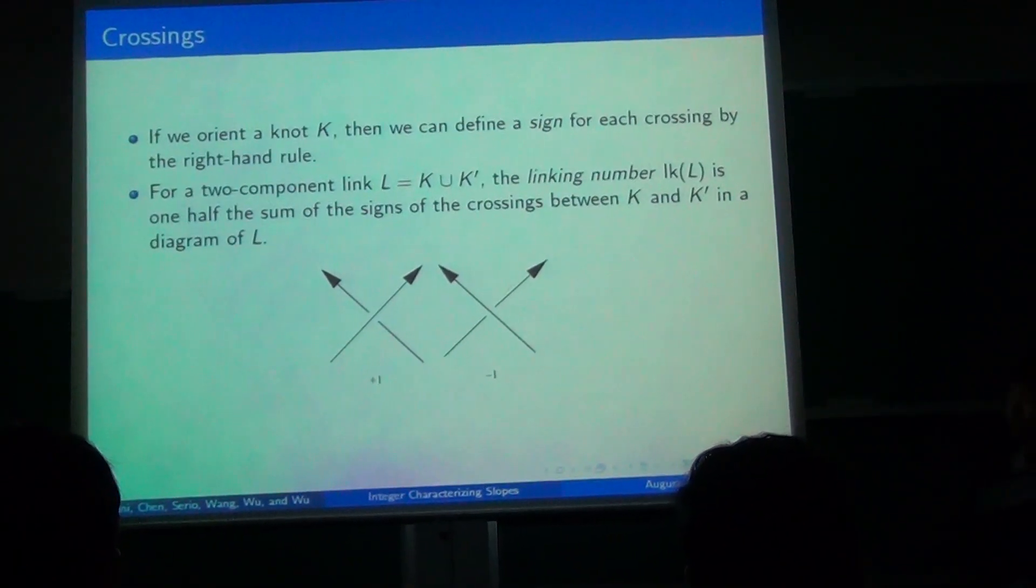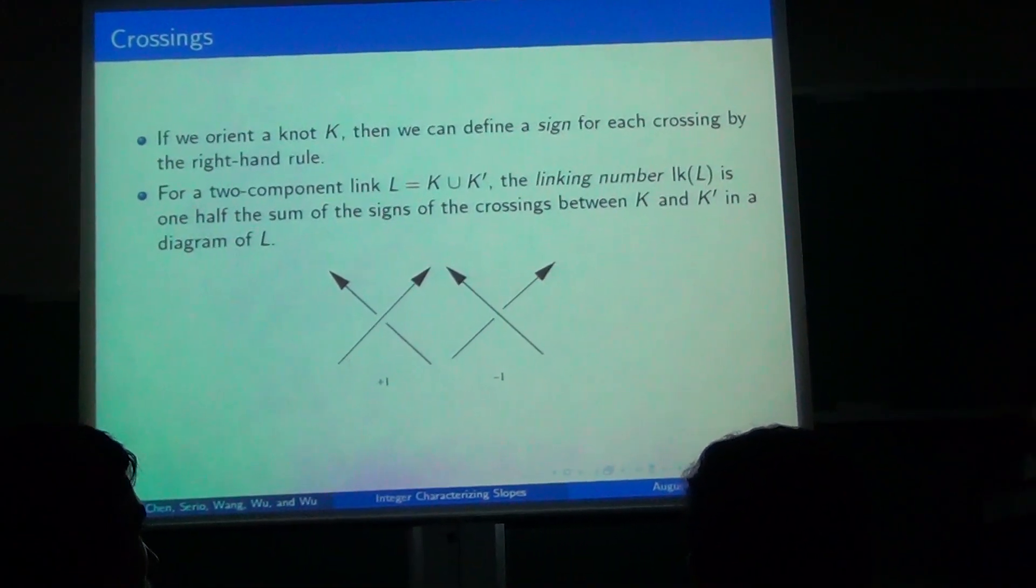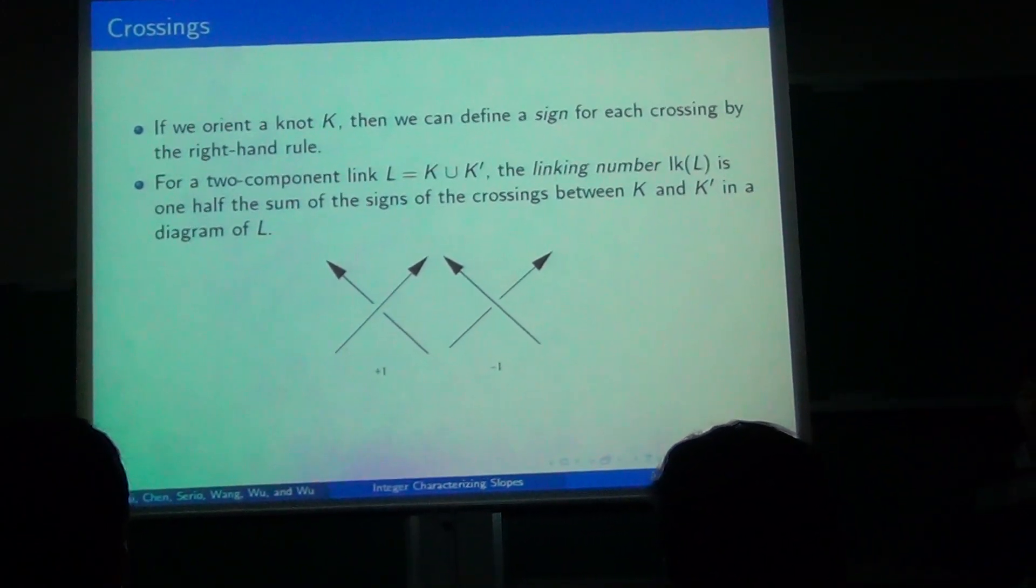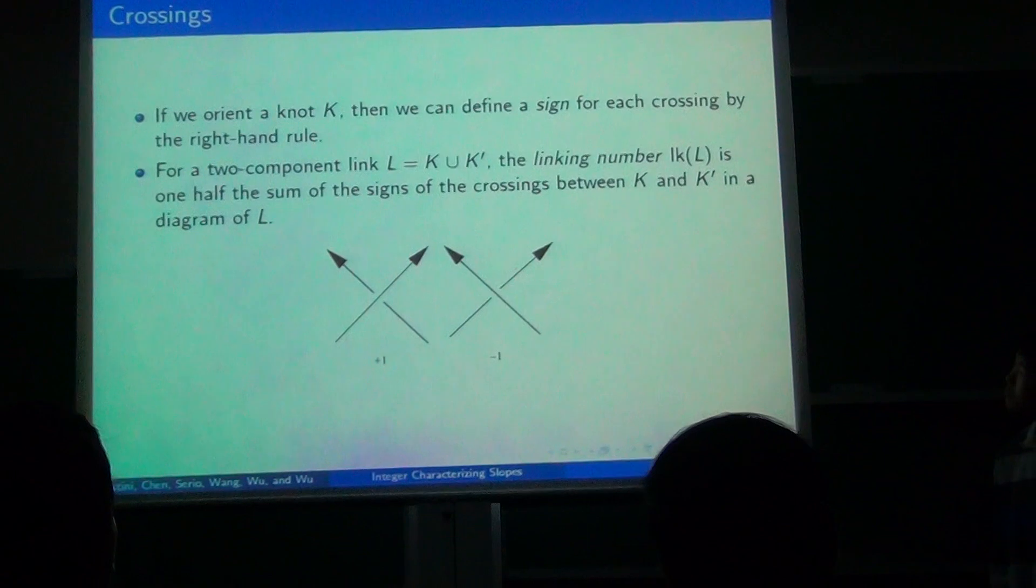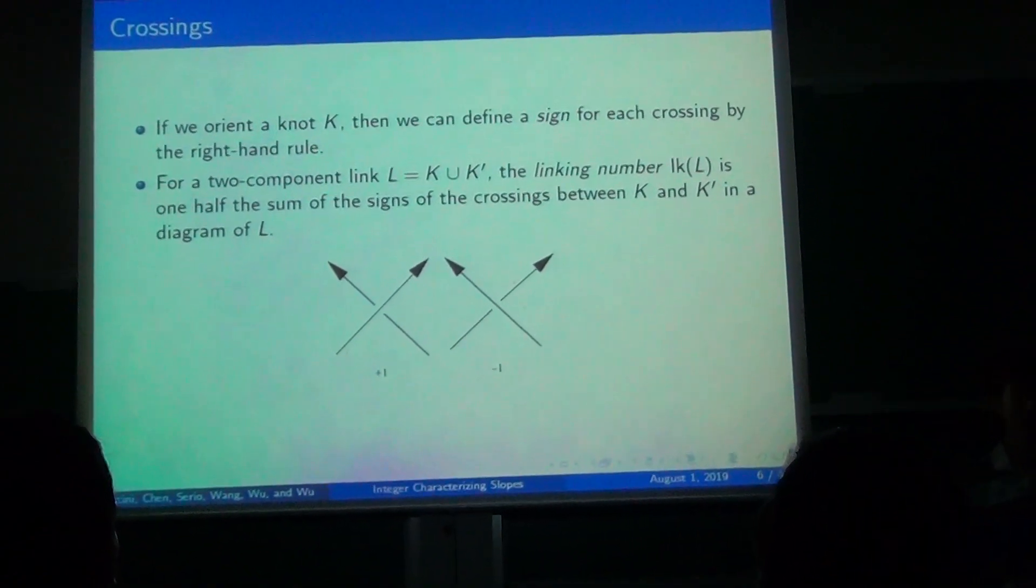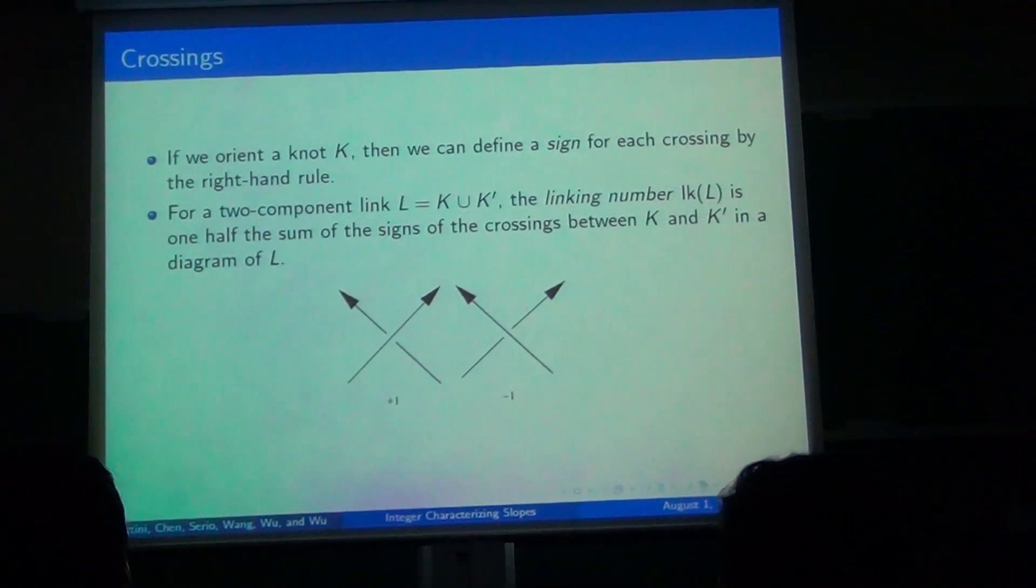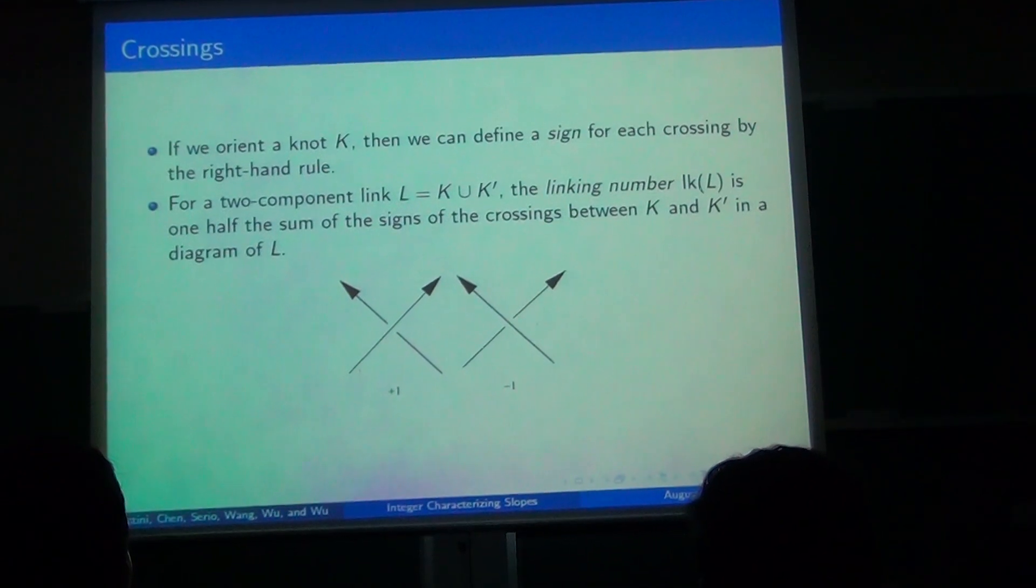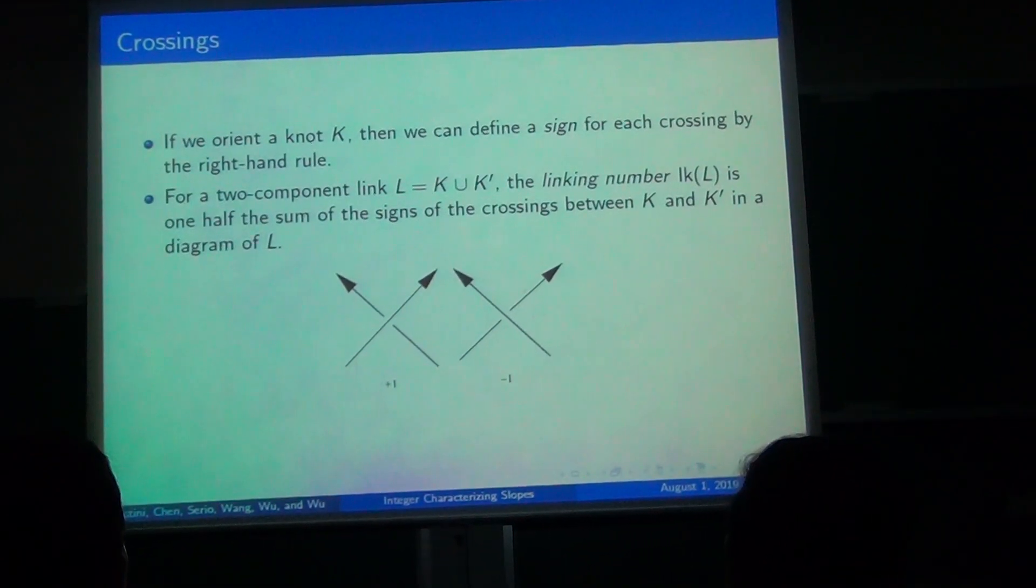And if we orient a knot diagram just by giving it a direction, then we can assign a sign to each of its crossings with the right-hand rule. And then we can define the linking number of two-component links, which is the sum of the signs of all the crossings between the two components divided by two. And that will be relevant later.